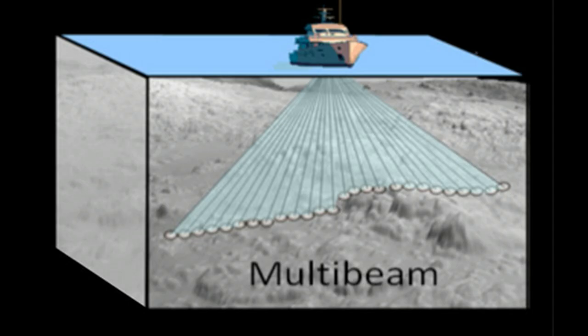In comparison, bathymetric sonars provide range, amplitude, and angle for each sample in a ping. The additional angle value makes it possible to compute the x, y, and z of each sample of a ping.